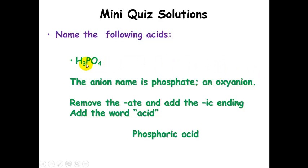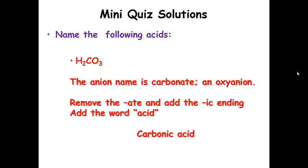Here's another one: the polyatomic is phosphate — it's an oxyanion. We remove '-ate' and add '-ic' to get 'phosphoric,' then add the word 'acid.' Remember, no 'hydro' because this polyatomic involves oxygen. Finally, here's the acid with carbonate — another oxyanion. Remove '-ate,' add '-ic' to get 'carbonic,' then add the word 'acid' — carbonic acid.